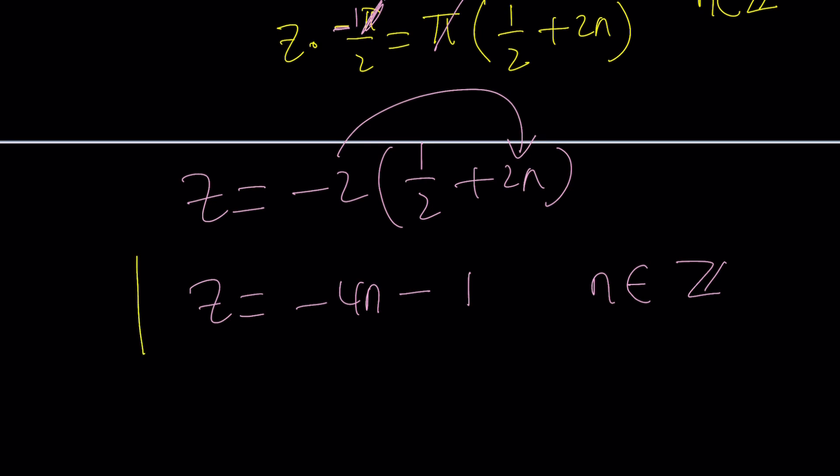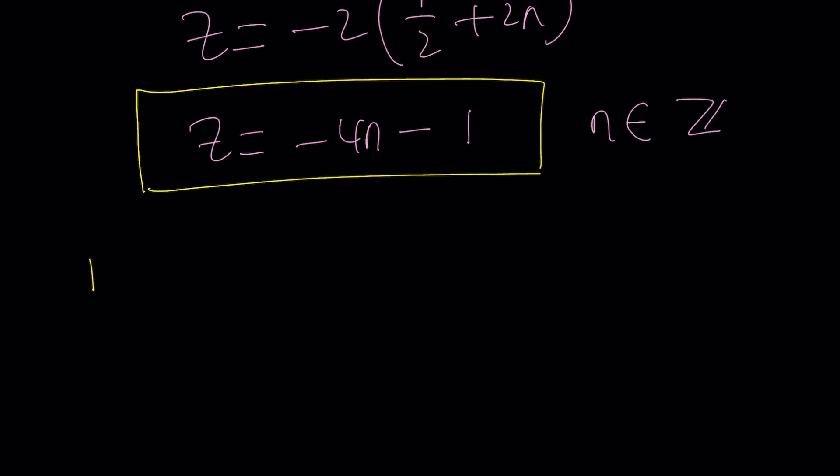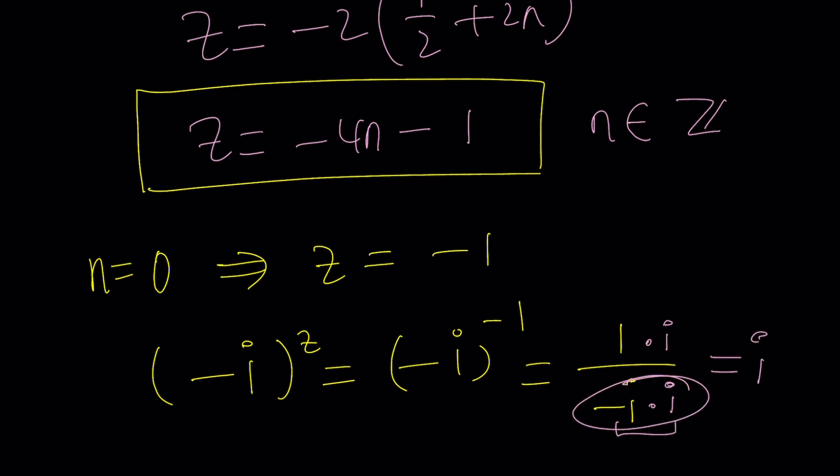Let's go ahead and elaborate on that a little bit. For example, if n is an integer, suppose n is equal to zero, then you would get z equals negative one. Is this actually true? Let's go back to the very beginning where we had the original problem, negative i to the power of z equals i, right? But let's just replace z with negative one. What is negative i to the power of negative one? It just means one over negative i. And as you know, something like this can be simplified if you multiply the top and the bottom by i, which is the conjugate. Negative i squared is one, and this will be i. So yes, z equals negative one is definitely a solution, and it's not the only one. There's plenty of solutions.